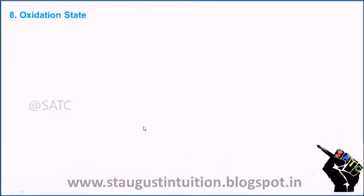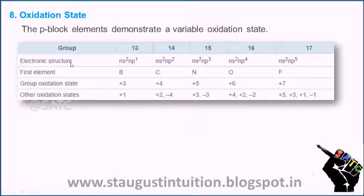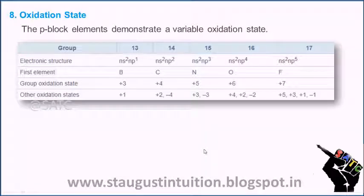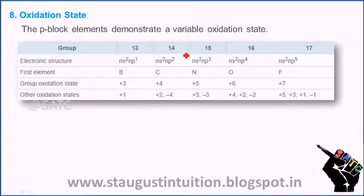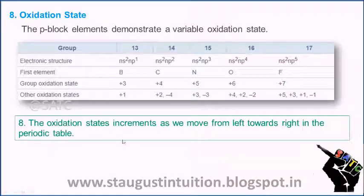The last point is oxidation state. For example, Group 13 Boron has oxidation state +3; Carbon (Group 14) has +4, -4, and +2; Nitrogen (Group 15) has +5, +3, -3; Oxygen (Group 16) has +2, -2; and halogens have +7, +5, +3, +1, -1. The P-Block elements demonstrate variable oxidation states, and the oxidation state increments as we move from left to right in the periodic table.